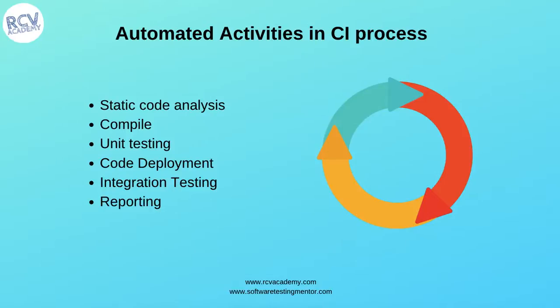This whole continuous integration process should be in place in agile development because in agile you have short iterations and a lot of code changes in each sprint. Unless you have continuous integration, automated unit testing, and automated regression testing in place, it becomes really difficult to cope with the manual testing effort as incremental builds happen in further iterations.